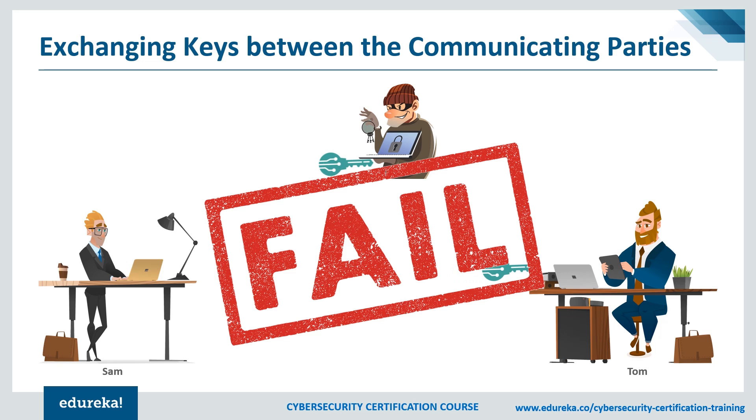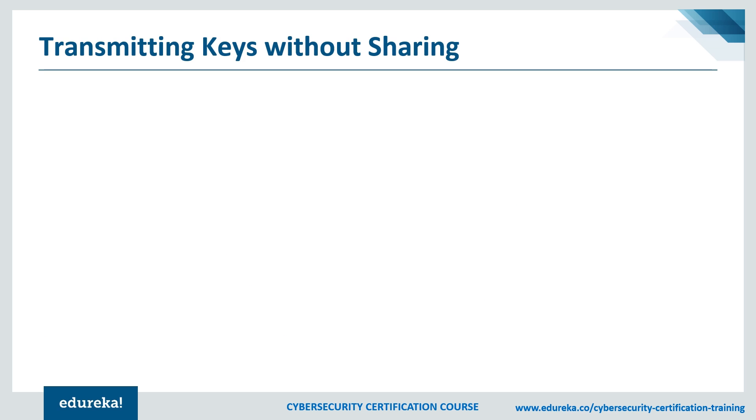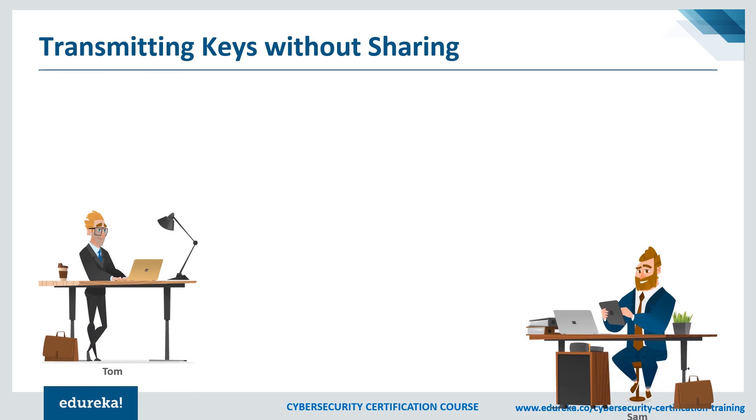One of the solutions to key exchange was proposed by Whitfield Diffie and Martin E Hellman. Let's understand this with a simple scenario. The process begins with two parties, Tom and Sam. They both agree upon an arbitrary starting color key that does not need to be kept secret, but should be different every time. In this example, the color is yellow.